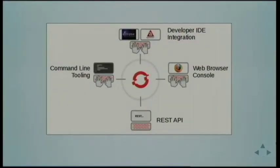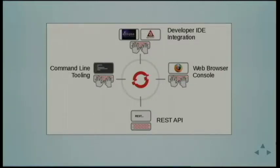There are a number of ways of talking to OpenShift through the broker: IDE plugins for Eclipse, a REST API if you want to do things with Jenkins. But the two main ways devs tend to use are either the web browser console or the command line.